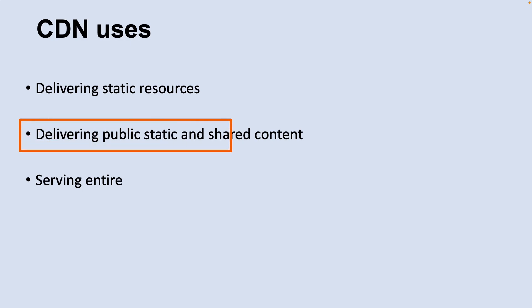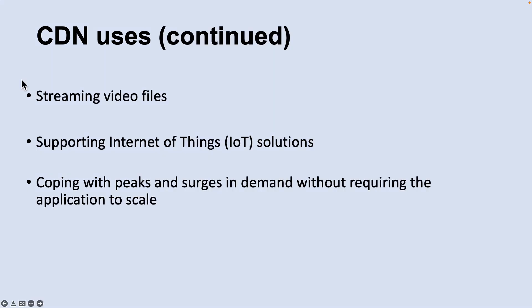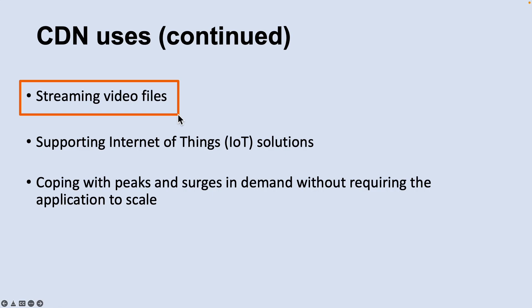The second use is delivering public static and shared content to devices such as mobile phones and tablets. Another use is serving entire websites that consist of only public static content without requiring any dedicated compute resources. CDNs are also used for streaming video files to client devices on demand, taking advantage of low latency and reliable connectivity from globally located data centers.